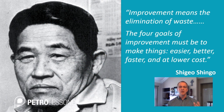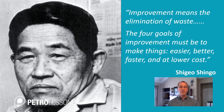A simple definition of lean is: improvement means the elimination of waste. That's what you want to do — improve things. The four goals of improvement have to be making things easier, better, faster, and lower cost. This was an idea brought forward by Shigeo Shingo, who was one of the developers of the Toyota Production System, which is the origin of lean.